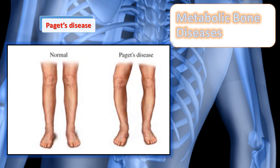Paget's disease, or osteitis deformans, is a chronic metabolic disorder in which bone is excessively broken down and reformed. The bone matrix is structurally disorganized, resulting in bone weakness with increased risk for bowing of the long bones and fractures. Two types are covered in your textbook: familial and sporadic. Teach patients the importance of genetics in familial Paget's disease and refer them to appropriate genetic counseling resources. Paget's disease is second only to osteoporosis in occurrence, and eighty percent of patients are asymptomatic, discovered during routine lab or x-ray exam.